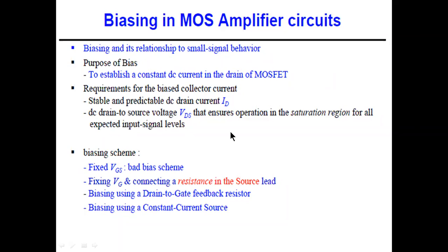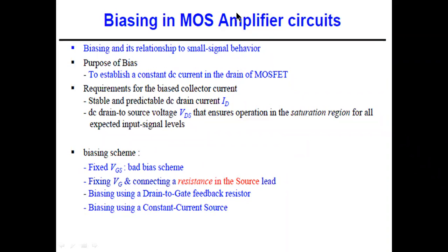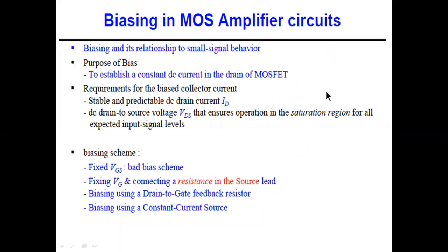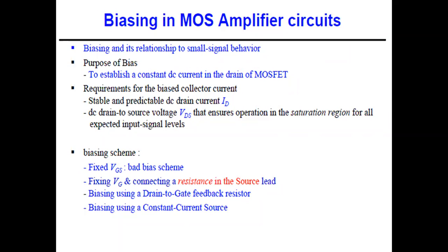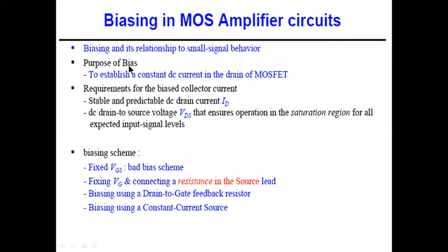The Q-point should be in the middle of the load line, in the saturation region. Unlike the BJT which has cutoff, active, and saturation regions — where the amplifier operates in the active region — the MOSFET has cutoff, triode, and saturation regions. For the MOSFET to act as an amplifier, we use the saturation region, not the triode region.